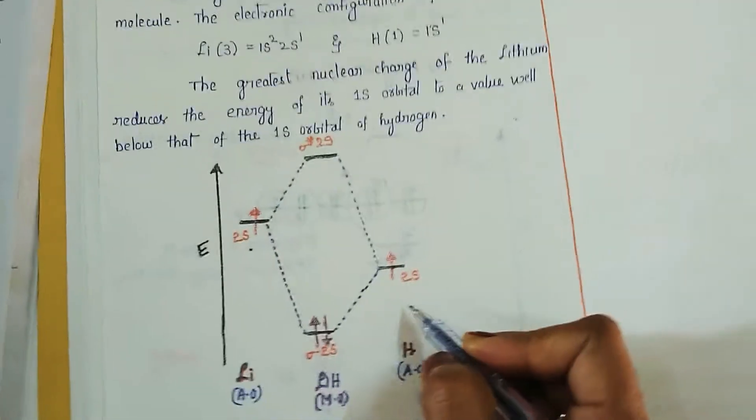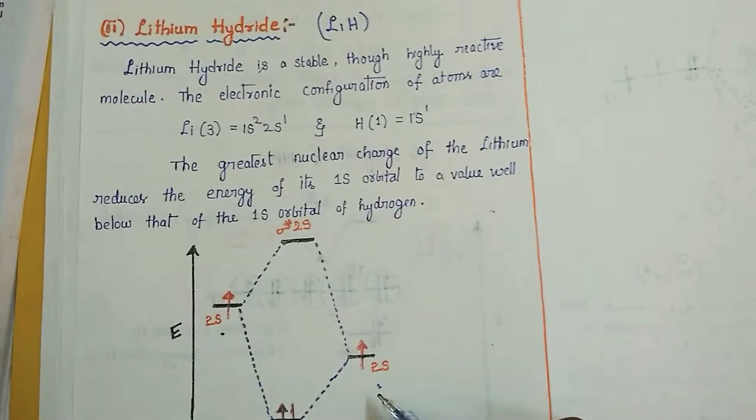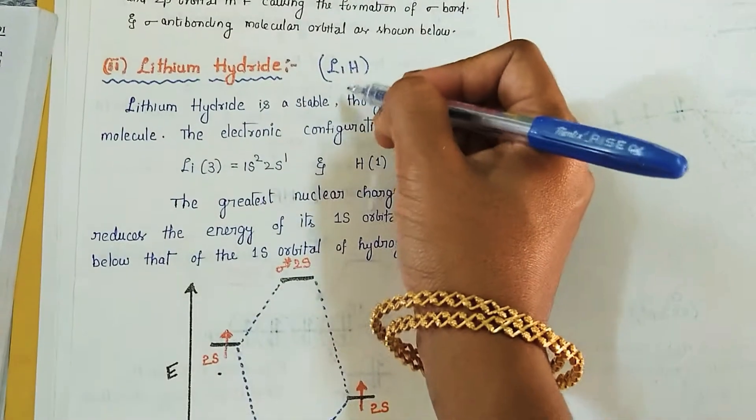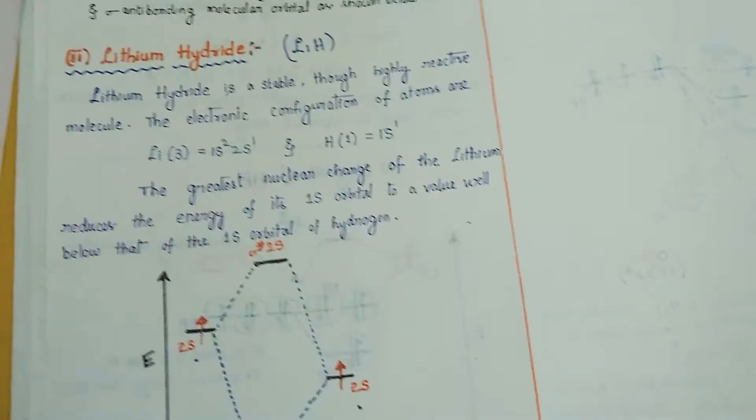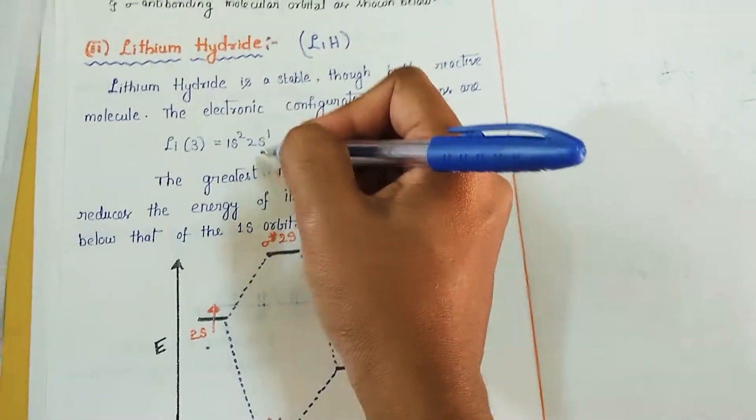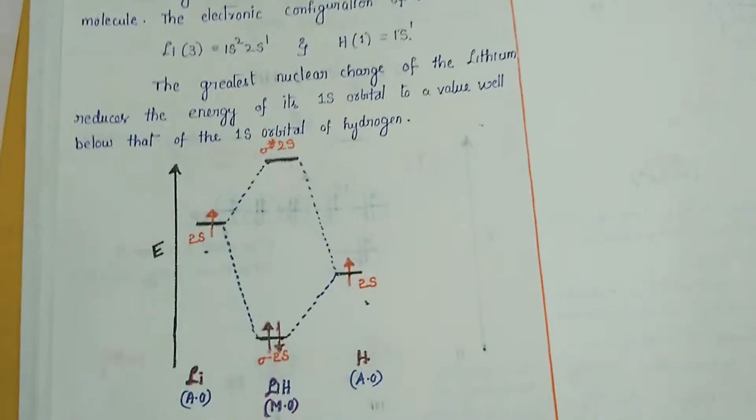This is the lithium and this will be the hydrogen atomic orbital. We know the configuration of lithium, that is 1s² 2s¹, and hydrogen is 1s¹, which is contributing one electron for formation of bonding, and this is also contributing one electron.